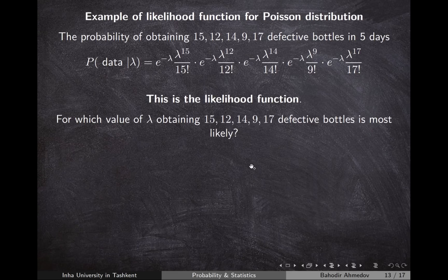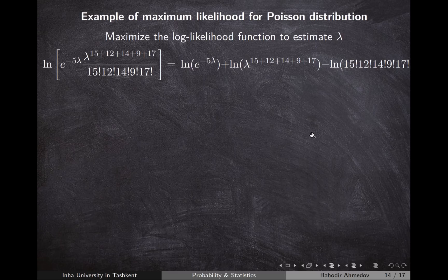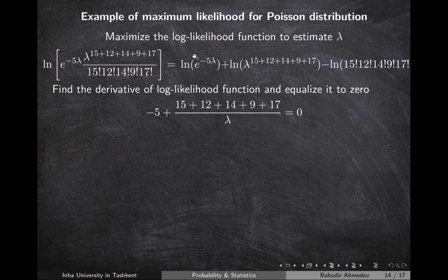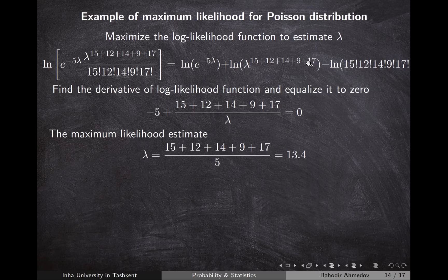We take the logarithmic likelihood function: ln(e^(−5λ)) + ln(λ^(sum)) − ln(factorials). Taking the derivative with respect to λ and setting it to zero: the derivative of −5λ·ln(e) = −5λ is −5, and the derivative of (sum)·ln(λ) is (sum)/λ. Setting −5 + (sum)/λ = 0, we solve for λ as the sum of all counts divided by 5.